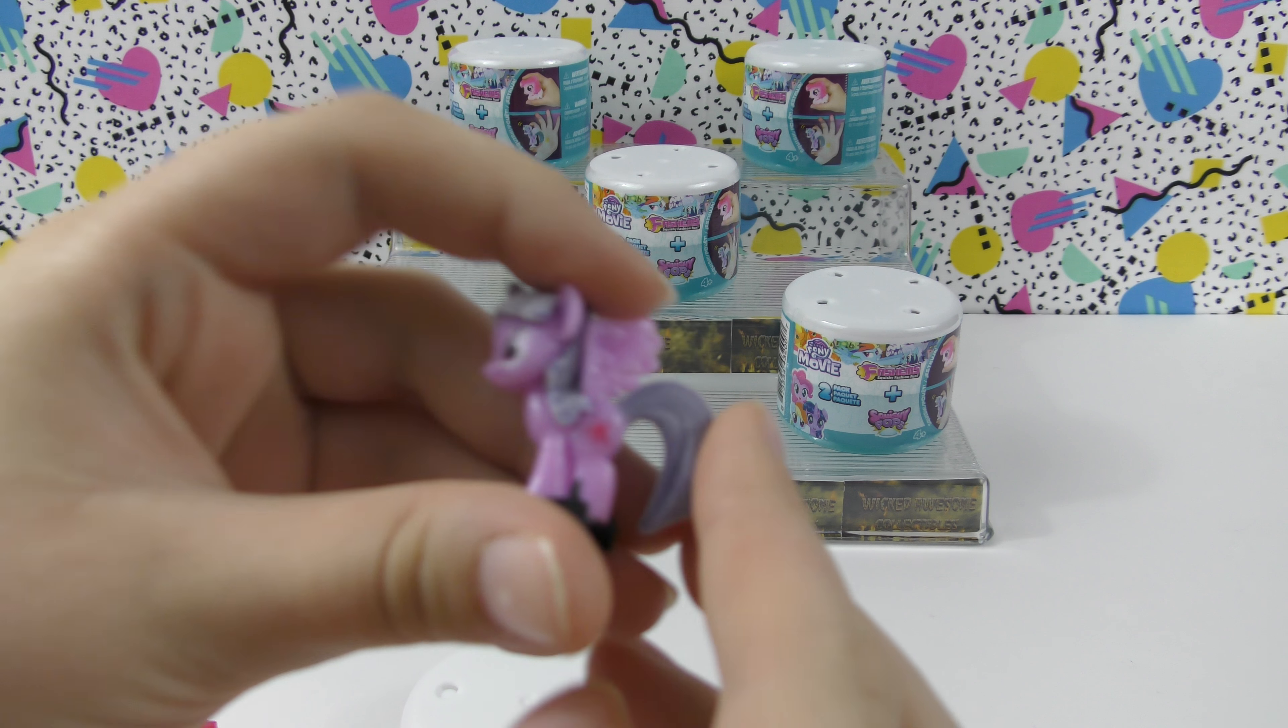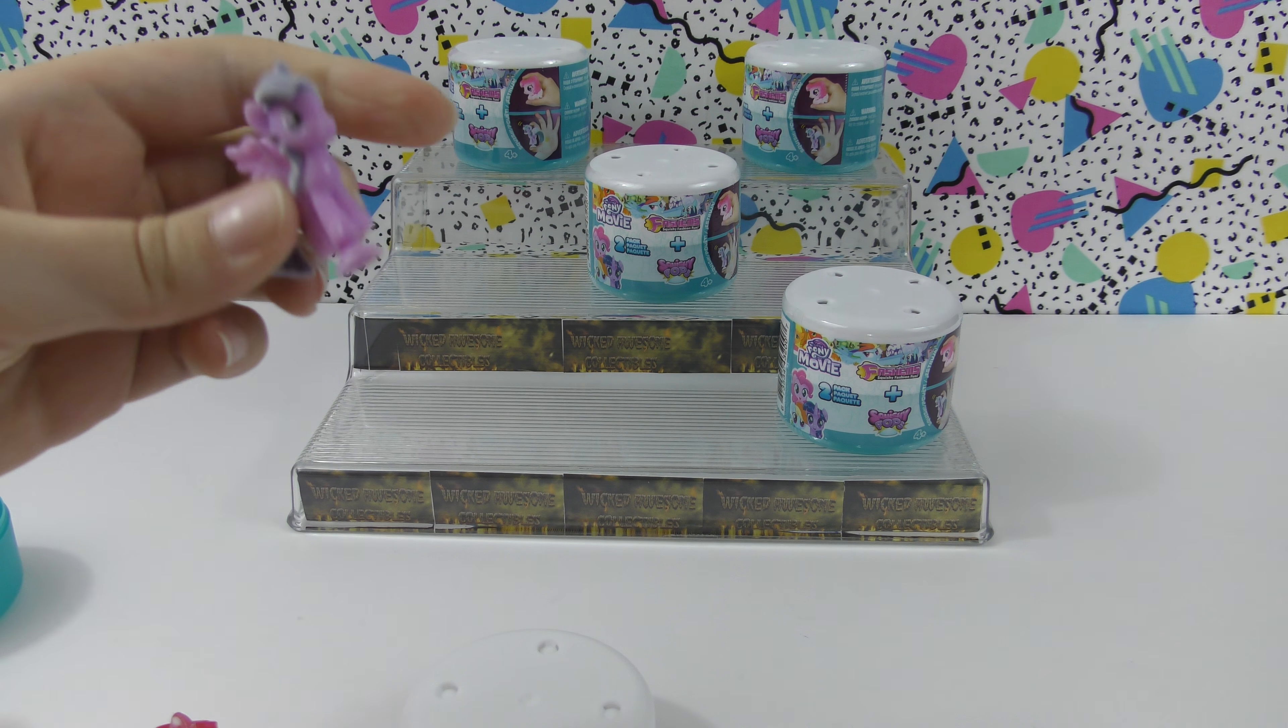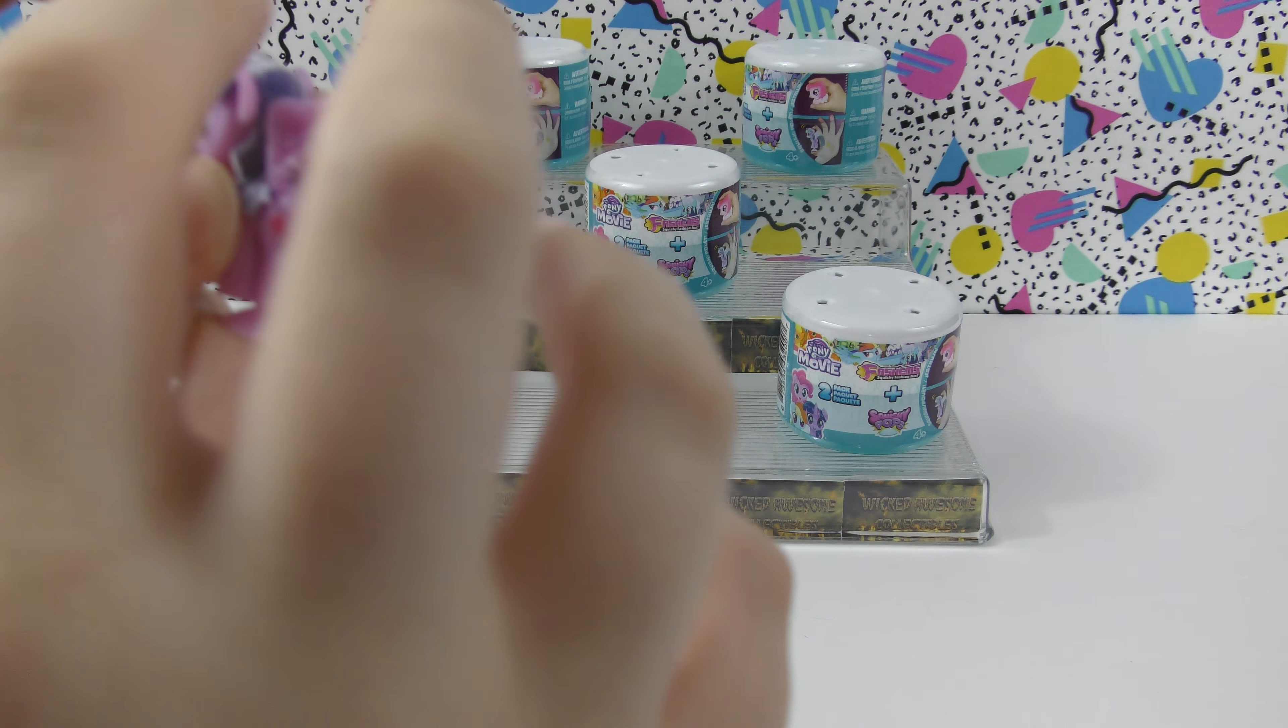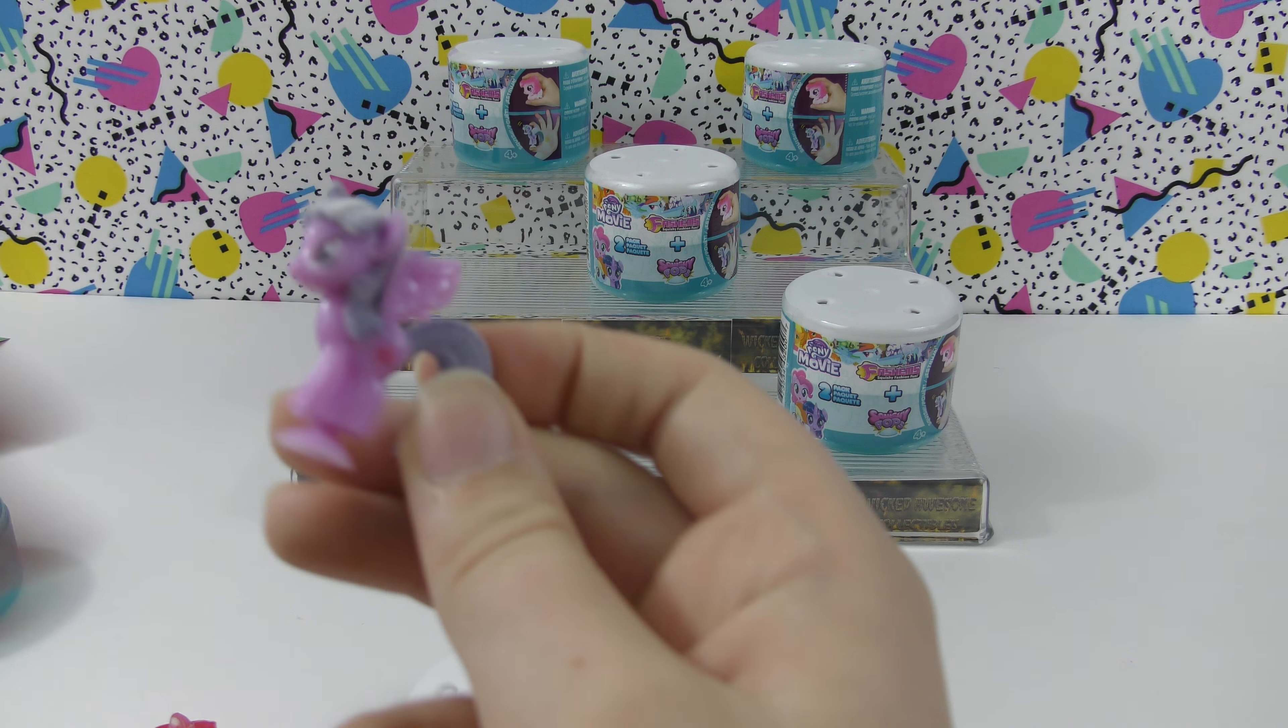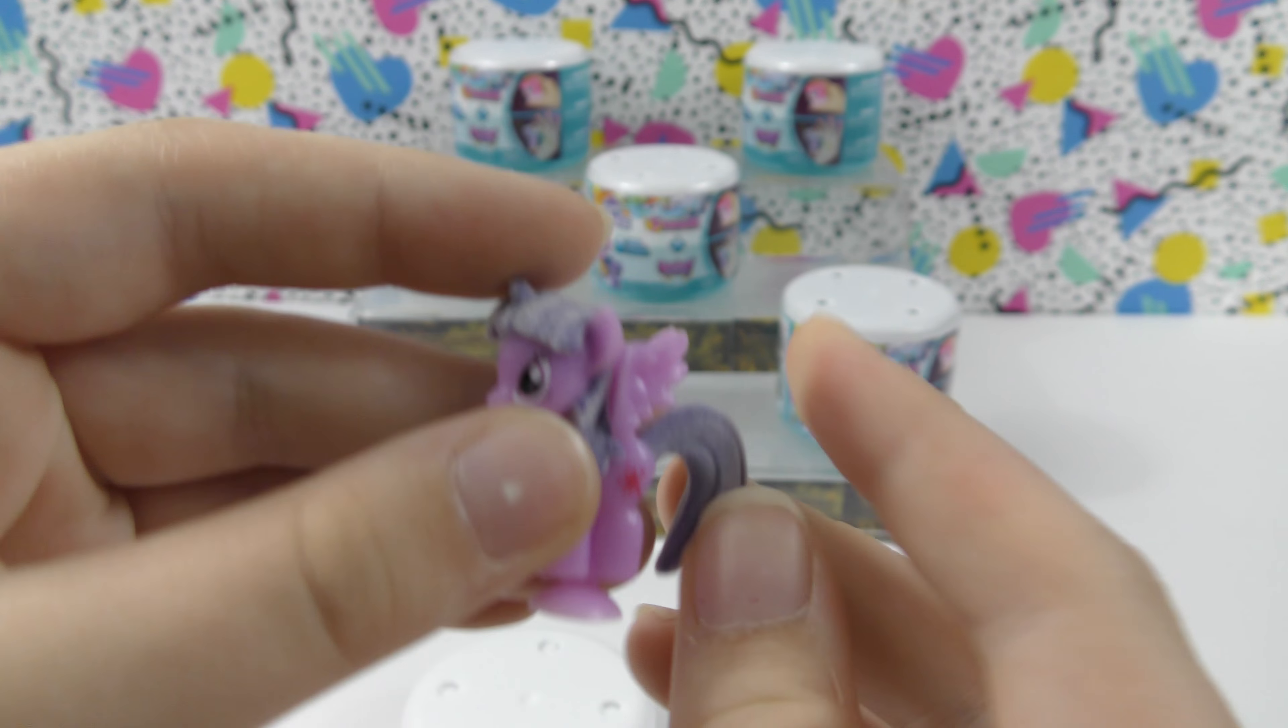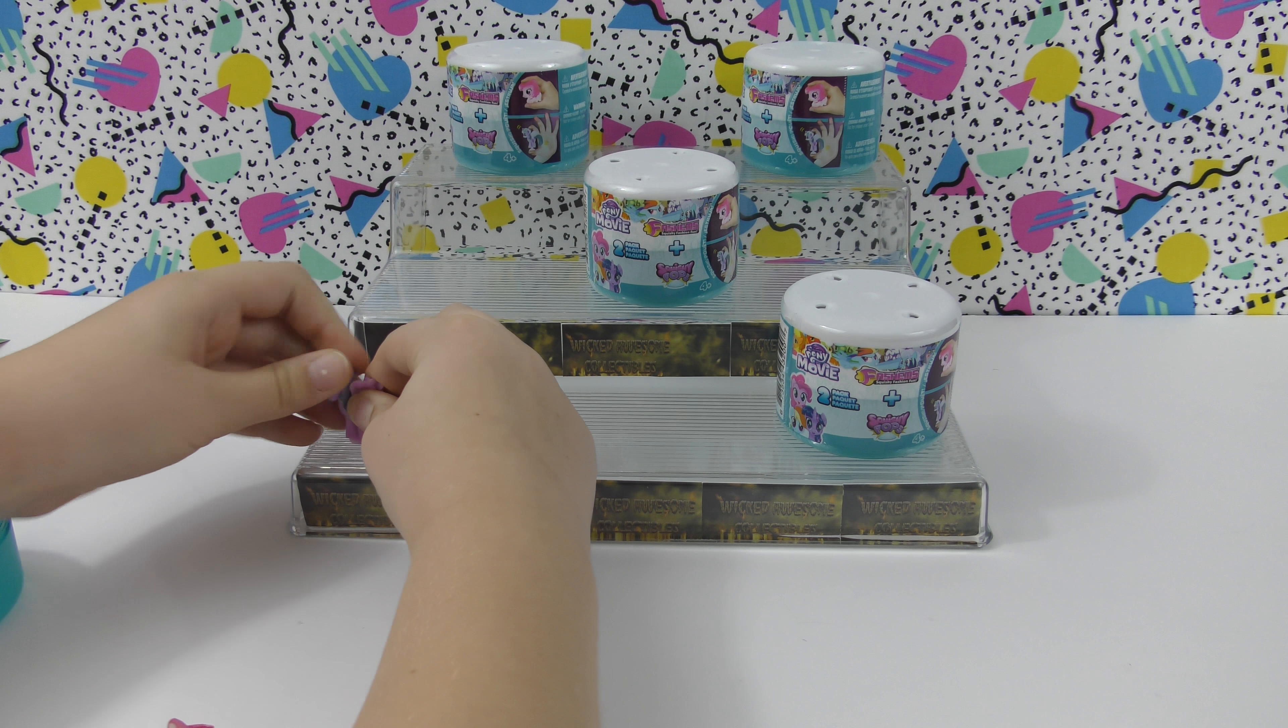We got a fuzzy squishy pop - Twilight Sparkle. I'm really excited because she's one with a fuzzy tail and mane. I really like her cutie mark, she's really cool. She is really soft. See if I can stick her down here - wow, she popped really well.